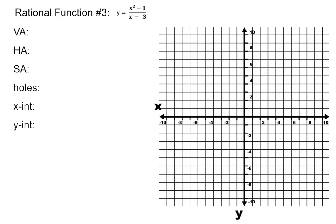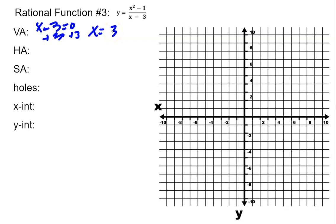The first thing when we're graphing rational functions is we're going to find our asymptotes. To find our vertical asymptotes, I'm going to take my denominator of x minus 3, set that equal to 0, and solve for x. If I add 3 to both sides, I now have x equaling positive 3. That means I have a vertical asymptote line at x equals 3, so I'm going to draw a vertical line crossing the x-axis at positive 3.